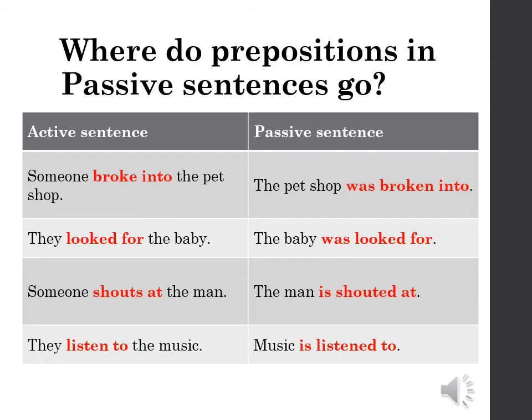Where do prepositions in passive sentences go? When we put an active sentence where a preposition follows the verb — for example 'break into,' 'look after,' or 'listen to' — into a passive, the preposition remains immediately after the verb. For example: 'Someone broke into the flat' → 'The flat was broken into.'